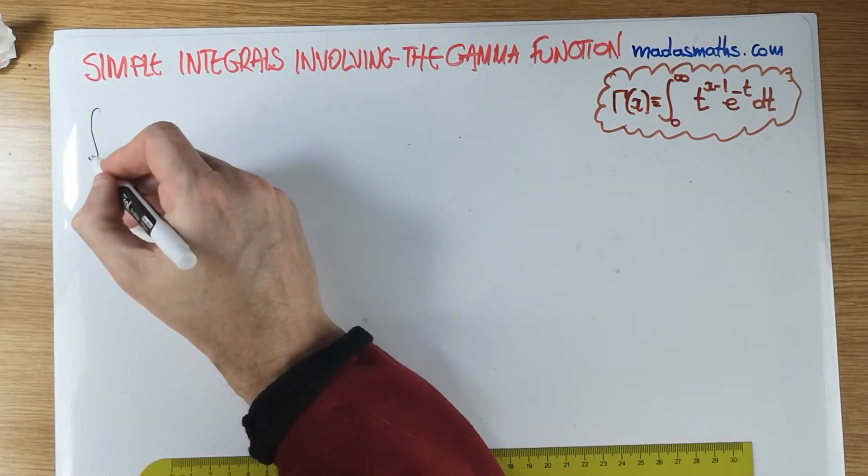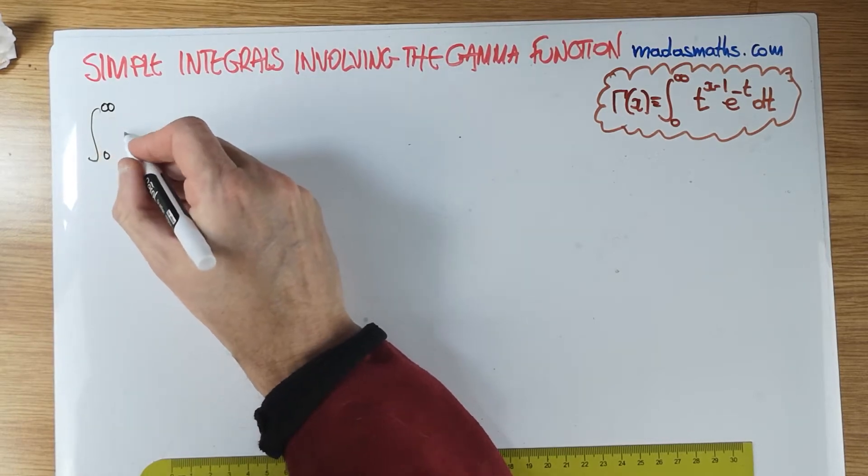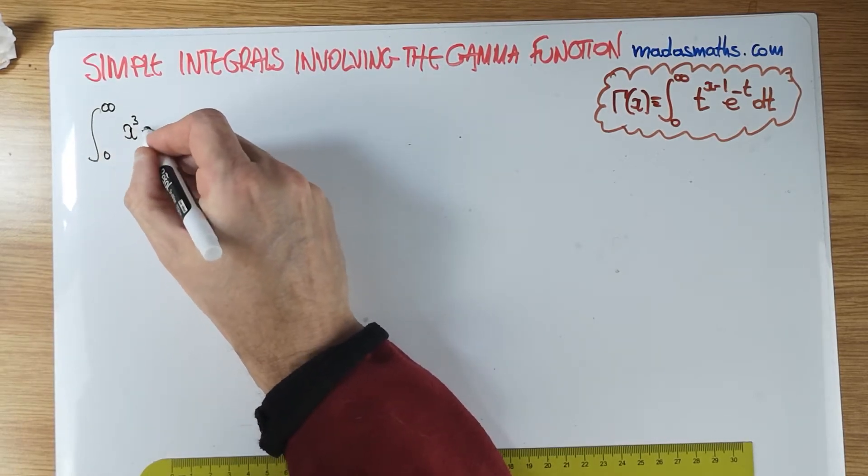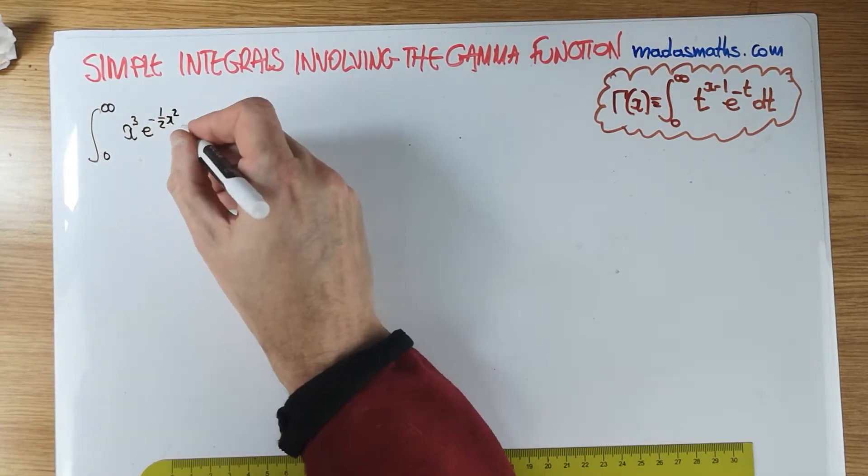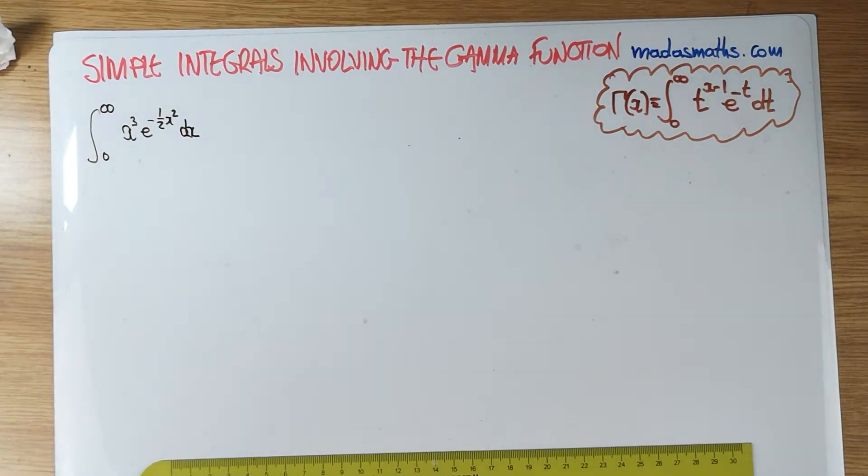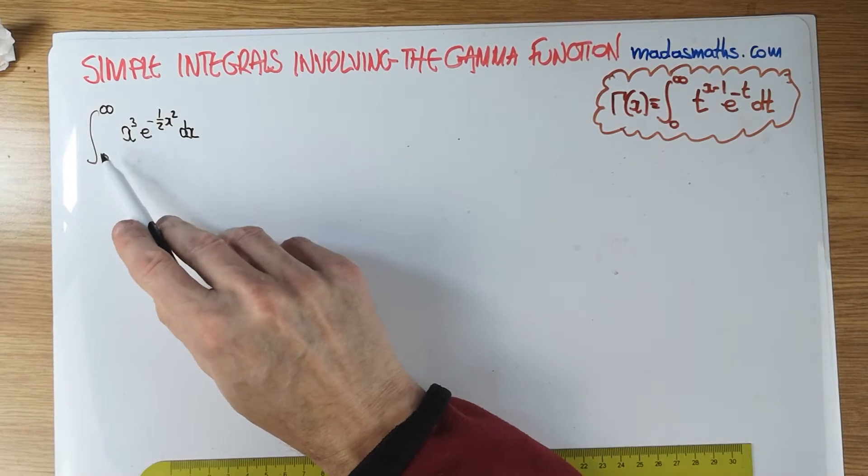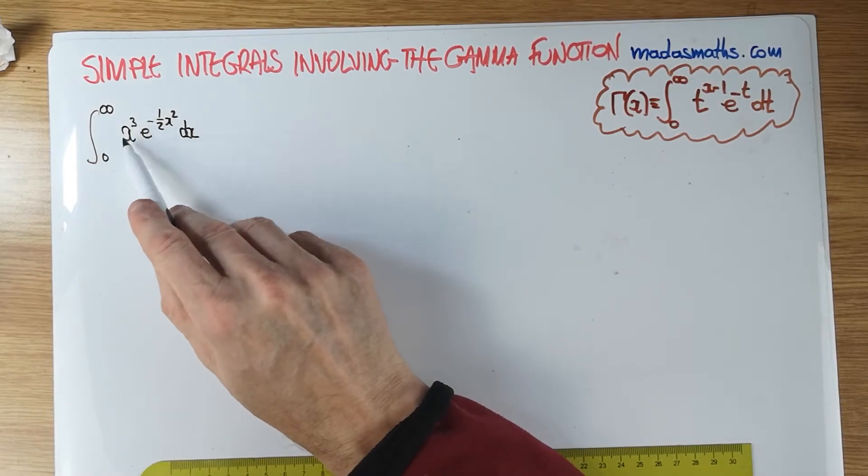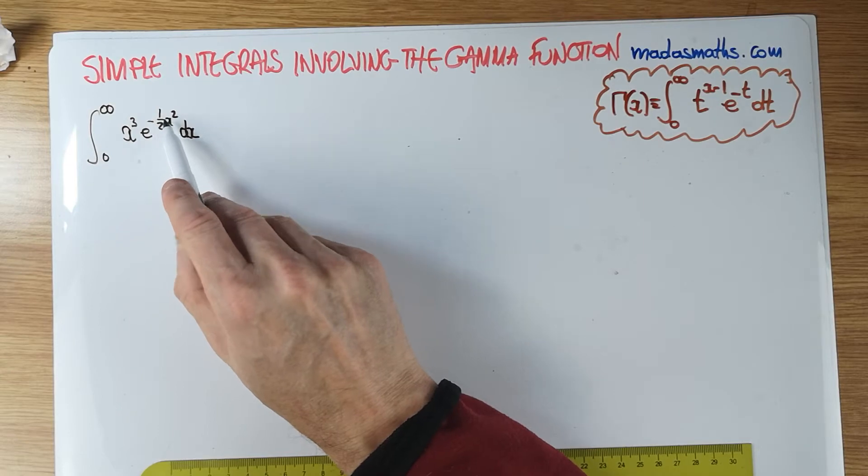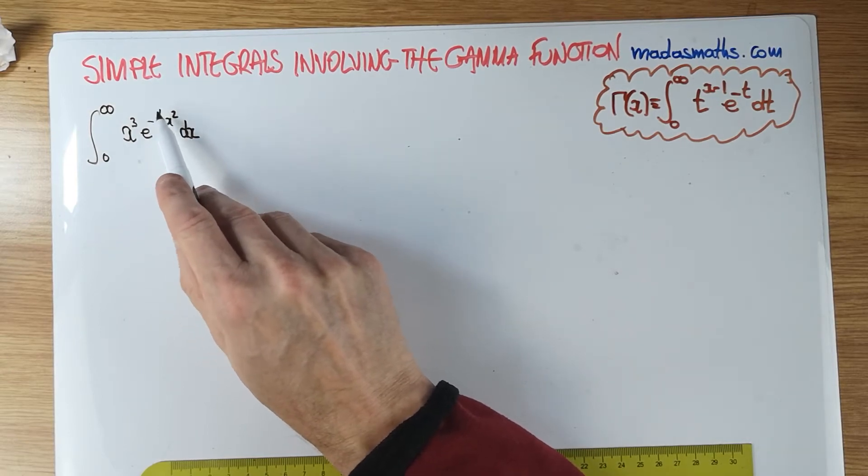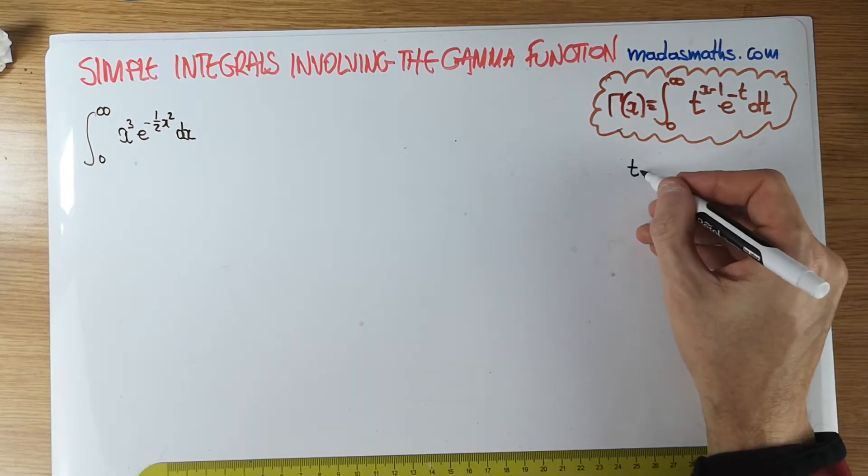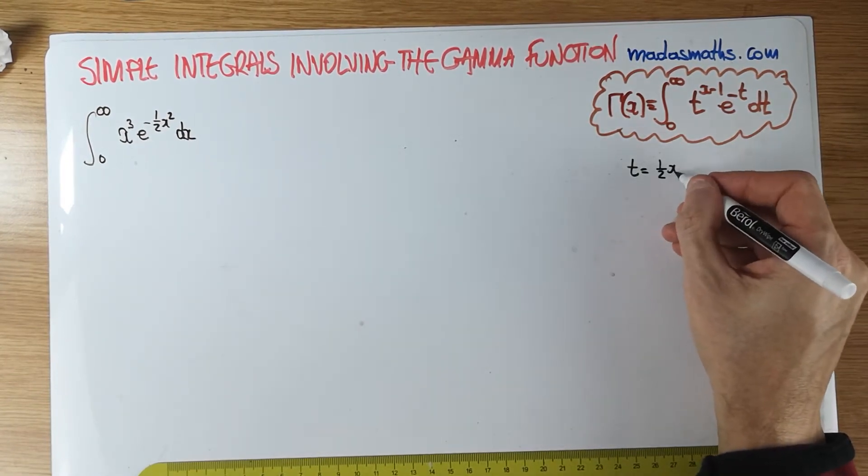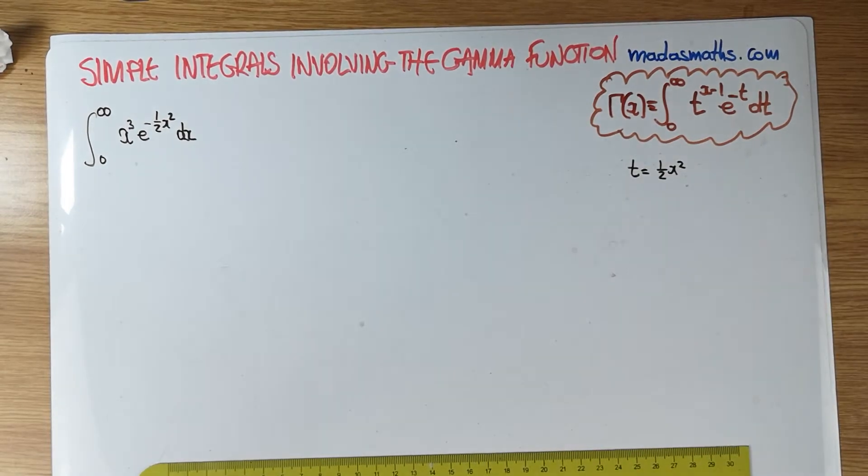The first one is the integral from 0 to infinity of x cubed e to the minus a half x squared. Not a difficult integral to do. Our rationale in order to see some kind of gamma function, the limits are lovely, that's not the problem. It's this bit here, that should be e to the minus just a single variable, no halves, no x squares, nothing. So we're going to use a substitution. Let's say t is a half x squared.